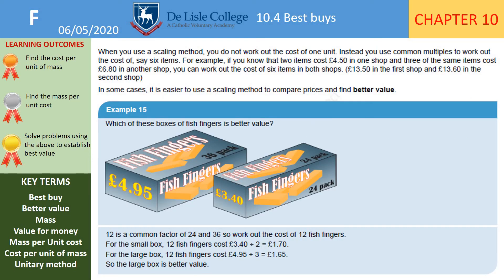Example 15: fish fingers — £4.95 for 36 or £3.40 for 24. They've decided here to find the cost of 12 fish fingers rather than the cost of one fish finger. Finding the cost of one fish finger would also be perfectly correct — it's just showing you that you don't always have to go back to one. 12 is the highest common factor of 24 and 36, which is why they've chosen to find the cost of 12 fish fingers.